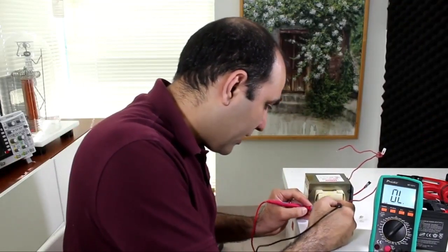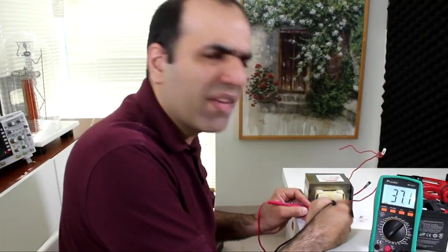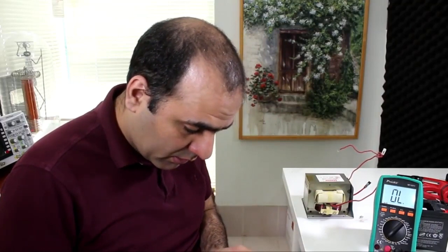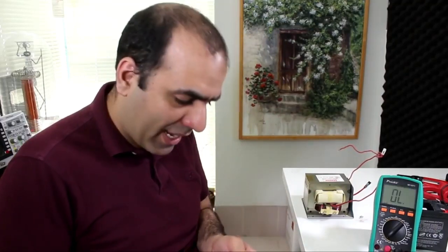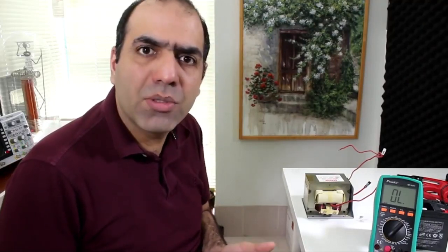Now the inductance of the primary is around 37 millihenry. That means at 60 Hz, I'll have around 14 ohms of impedance and at 120 volt AC, it means 8 amps of current into primary. It's still not very small, but I guess it's not large enough to trip a breaker. So let's power it up.